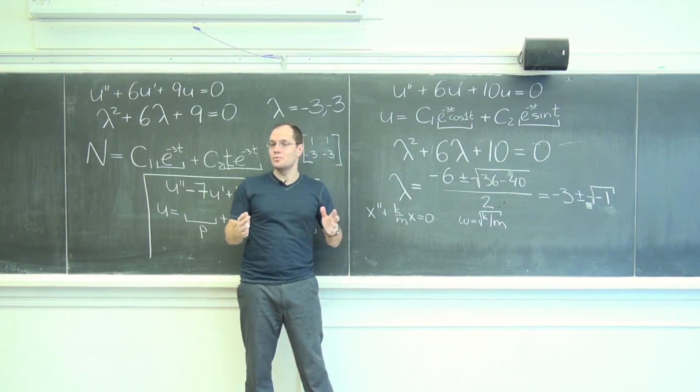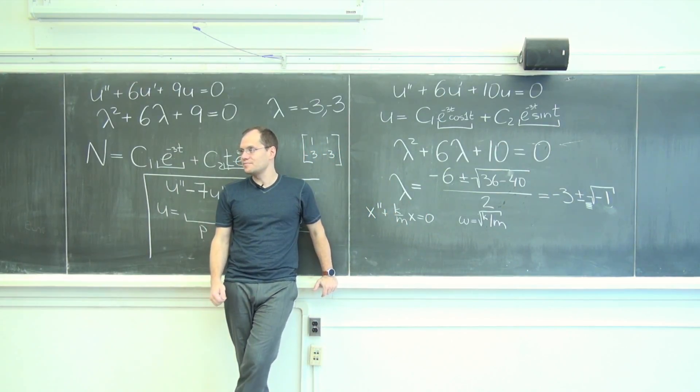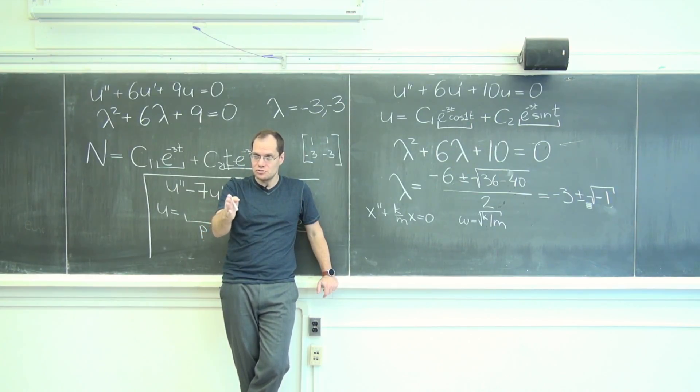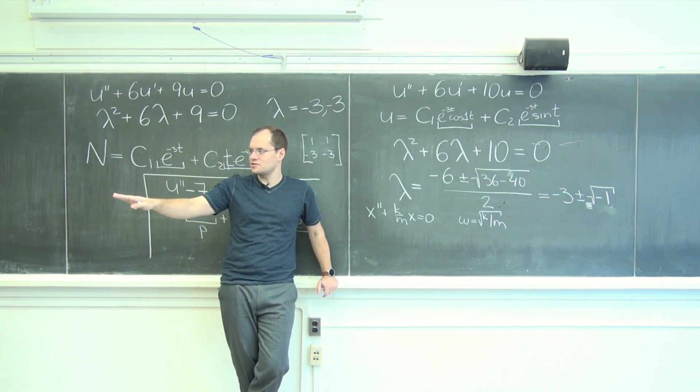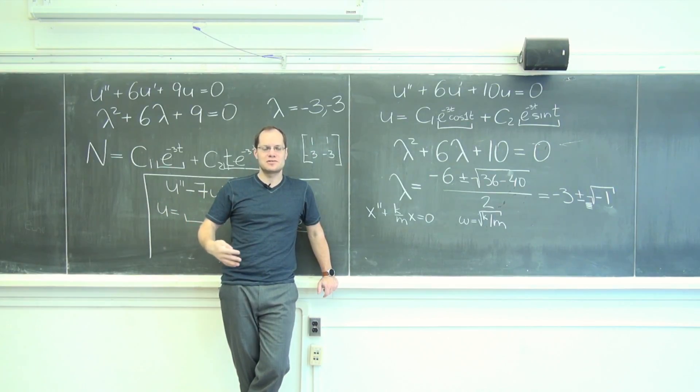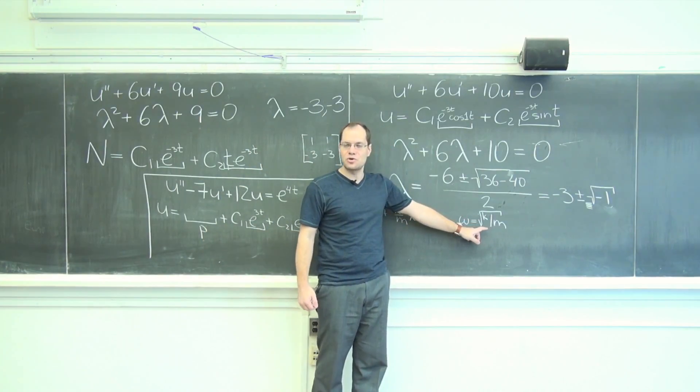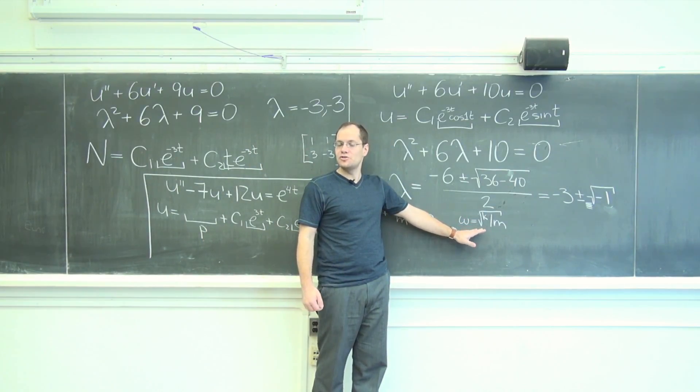You might be driving it at a different frequency and that will be reflected into the solution that goes into the particular solution. But the frequency with which the body naturally wants to oscillate at is this square root of K over M. This is called the natural frequency of the body.